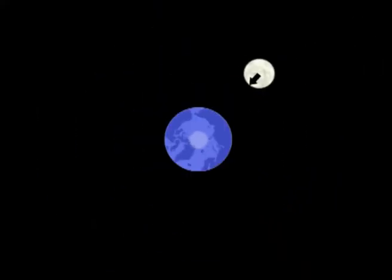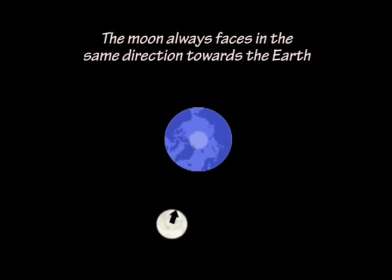Over the same period of time, the Moon also spins once on its axis, so that it is always facing in the same direction towards the Earth.